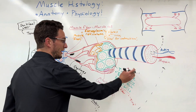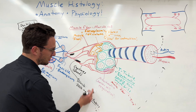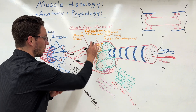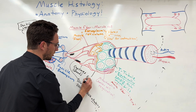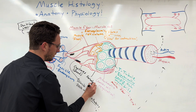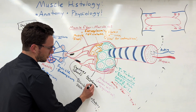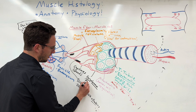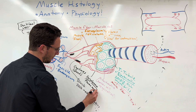Before diving into the myofibril, let's mention the plasma membrane. The outer part of the muscle cell is called the sarcolemma, which translates to 'muscle lining' — essentially the plasma membrane of the muscle cell.